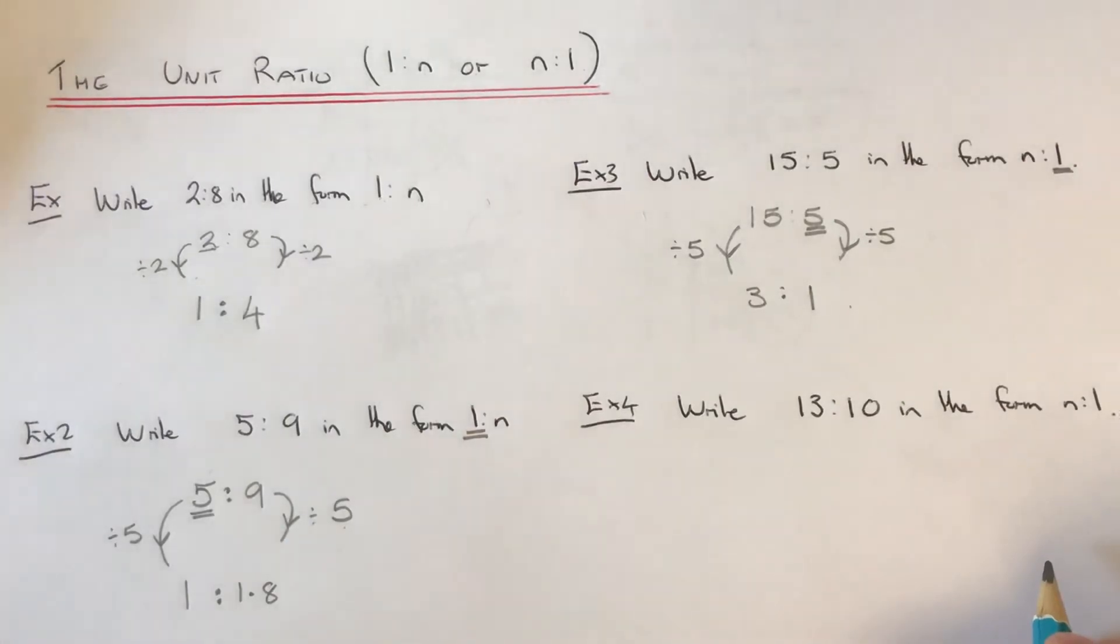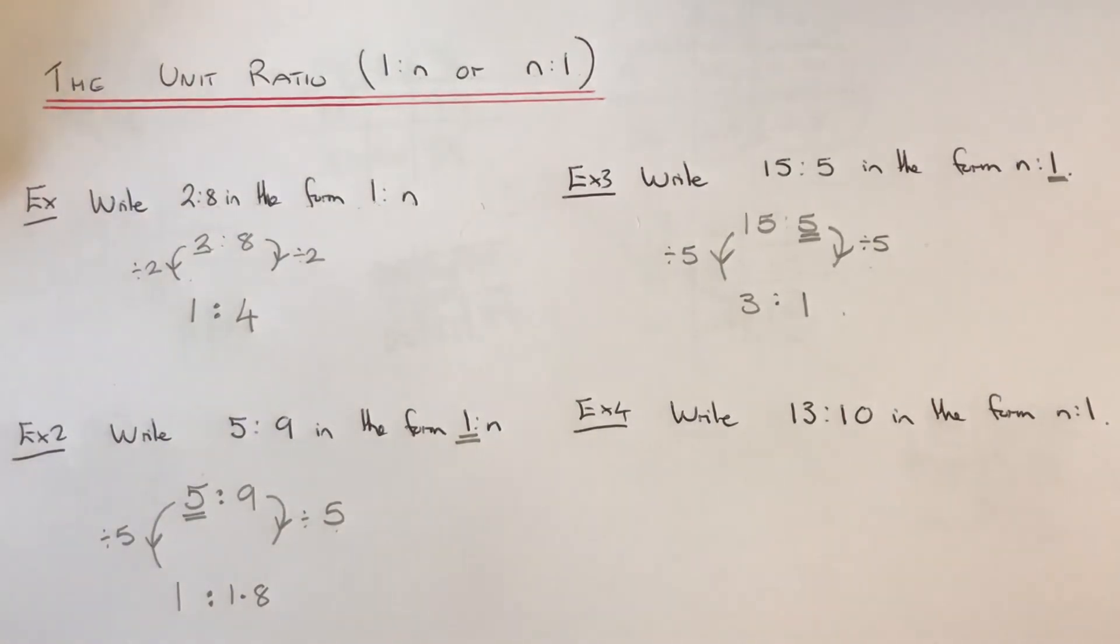And we've got our final example here. So this time, we've got to write 13 to 10 in the form N to 1. So again, let's copy our ratio down.